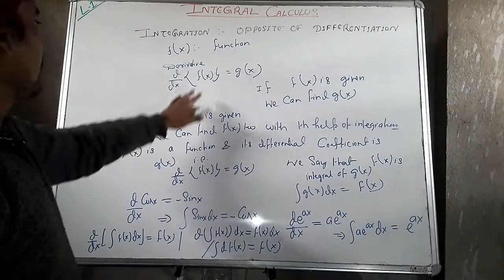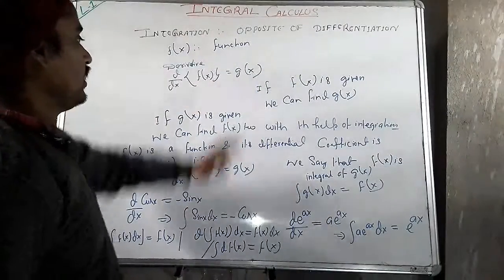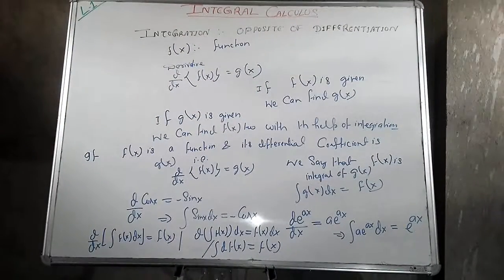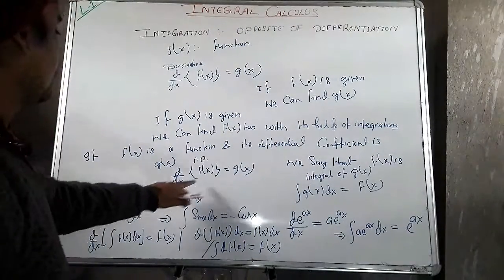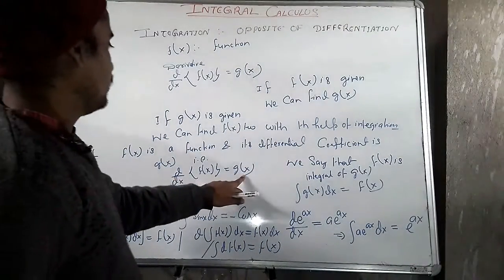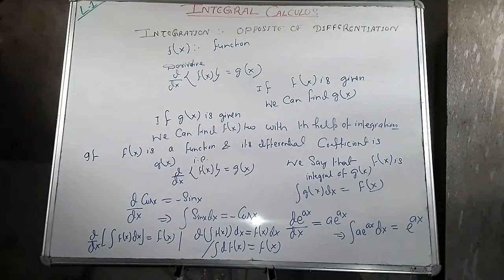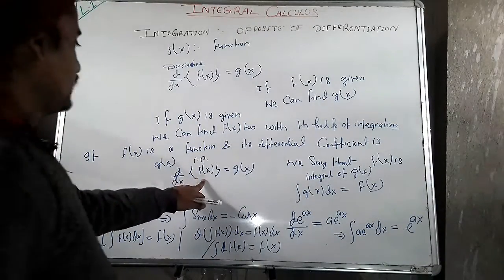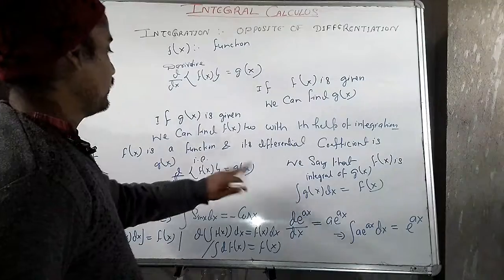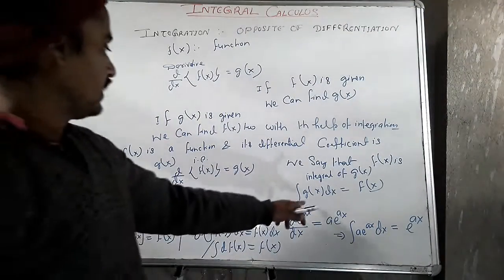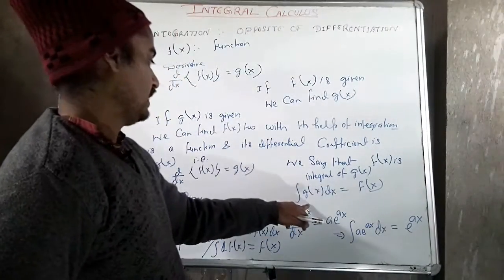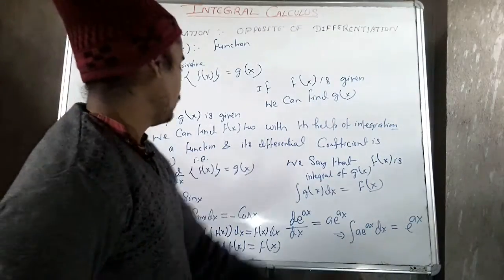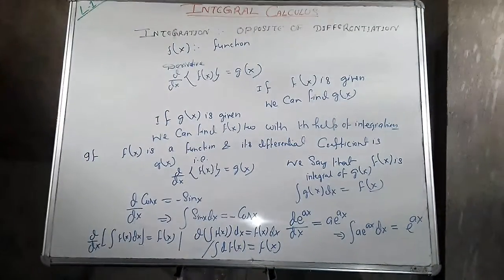Now in integration, if g(x) is given, we can also find f(x) with the help of integration. Suppose f(x) is a function and its differentiation coefficient is d/dx f(x) = g(x), then we can say that f(x) is the integral of g(x), which we write as: ∫g(x)dx = f(x).